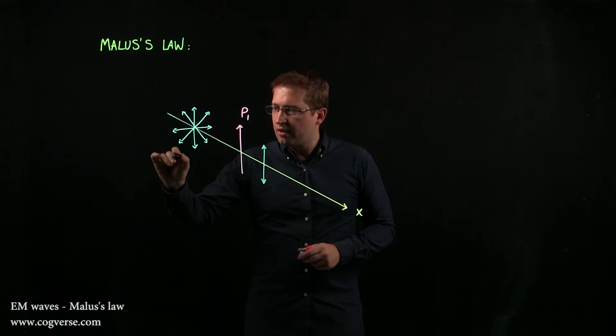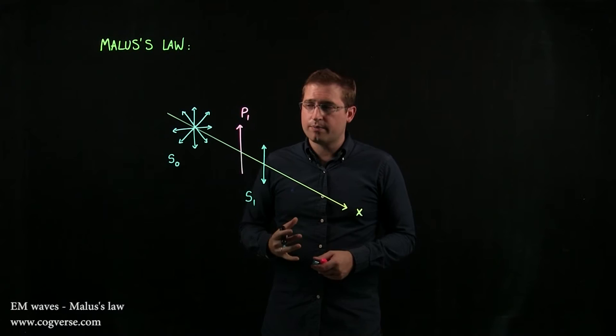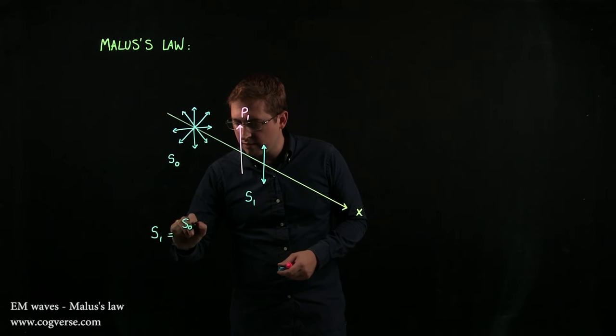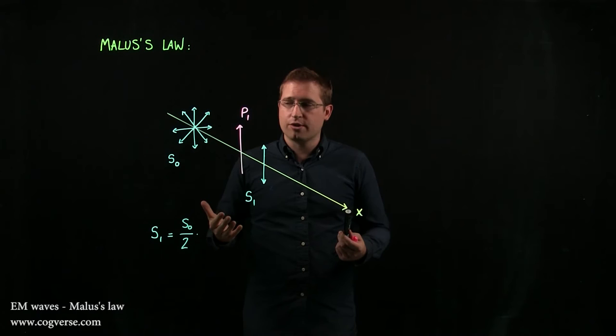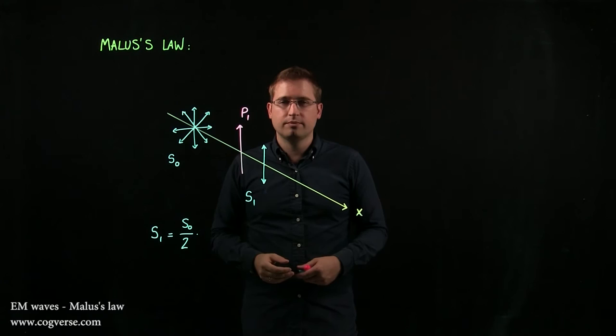If the intensity of this unpolarized light is S0 and the intensity of the polarized light is S1, then we have S1 equals S0 over 2. And that seems to make sense. We got rid of half of the components. All the horizontal components of the unpolarized light got blocked by P1, and we only kept the vertical components.